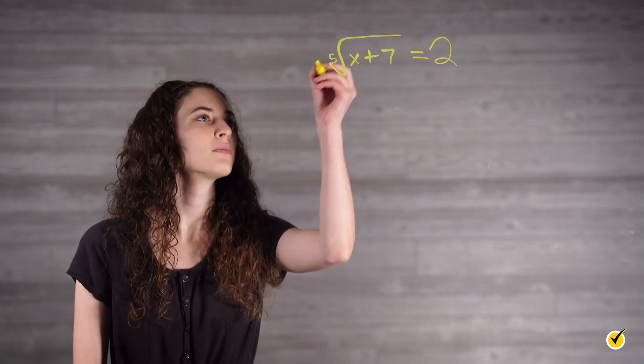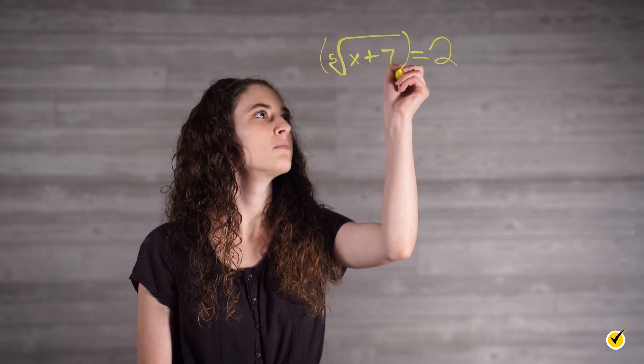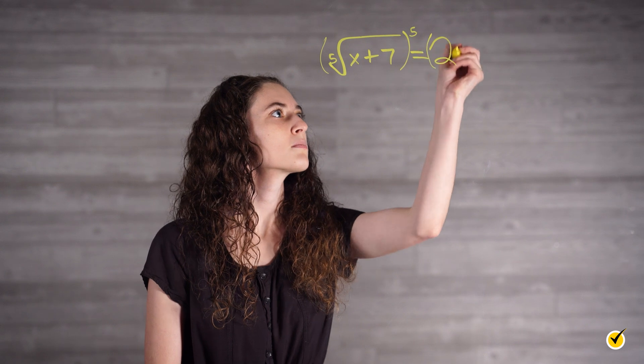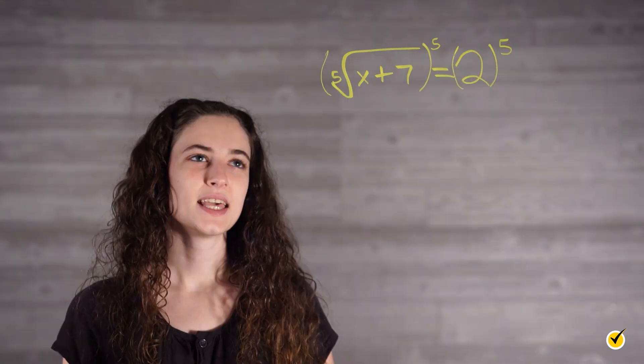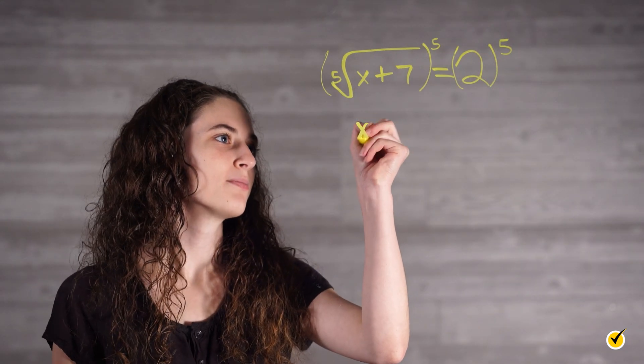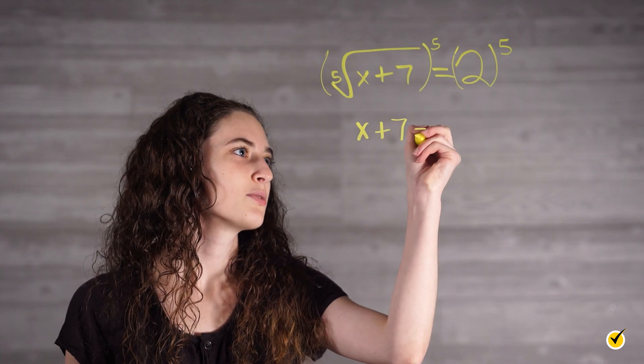In order to get rid of our root, we have to do the opposite operation, which is to put both sides to a power. Since we have a fifth root, we want to put both sides to the fifth power. This gives us x plus 7 is equal to 32.